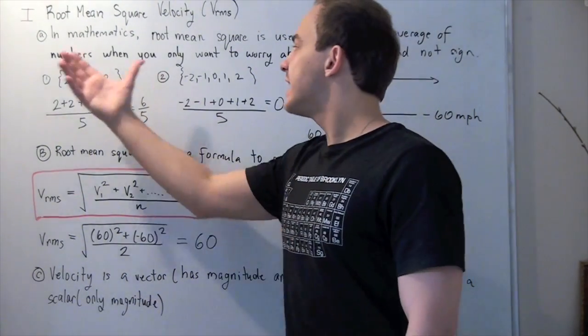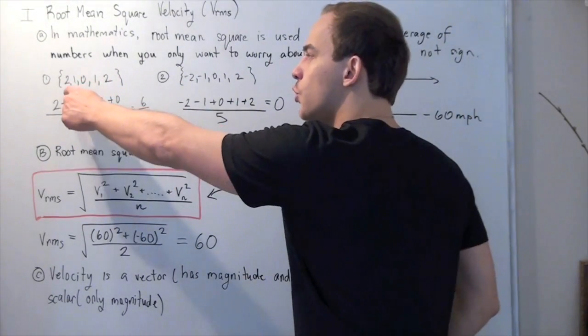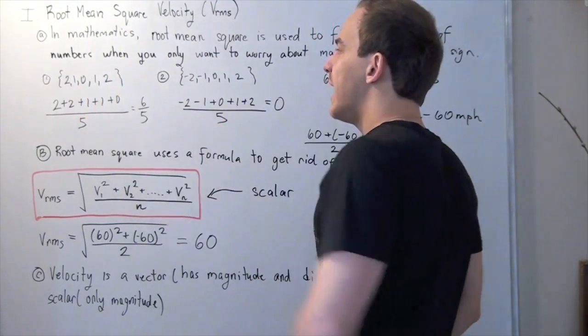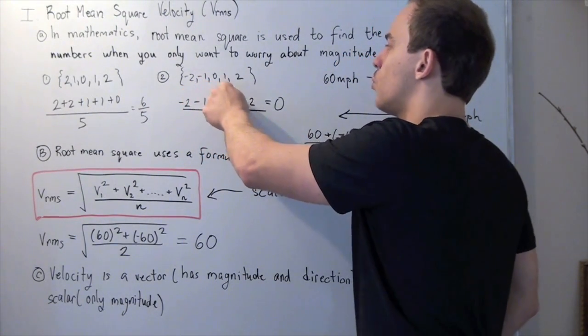Now let's look at two sets of values. In my first set, I have 2, 1, 0, 1, 2. In my second set, I have negative 2, negative 1, 0, 1, 2.